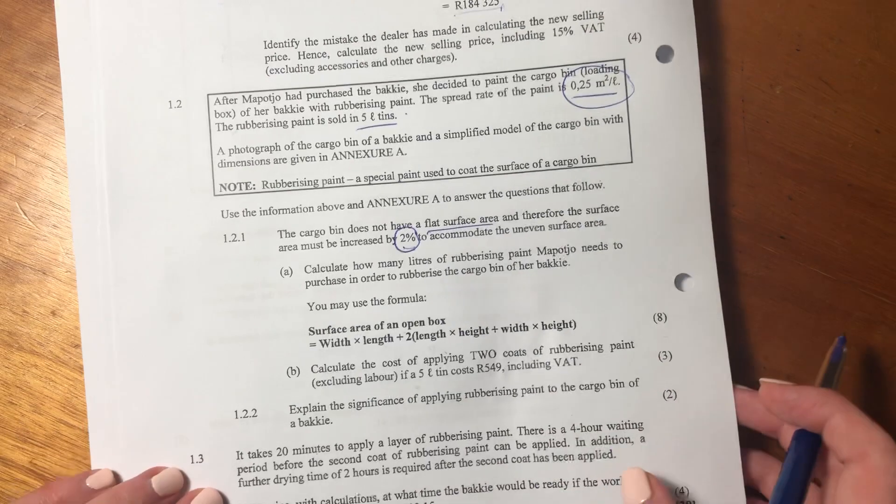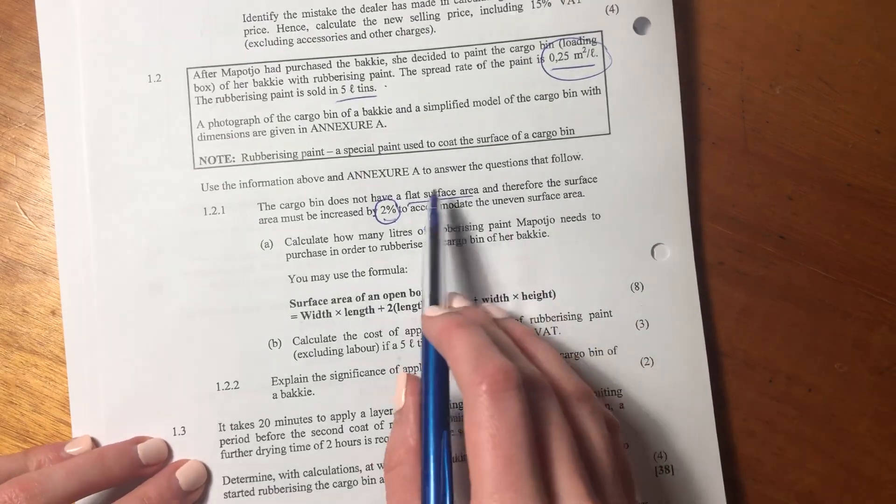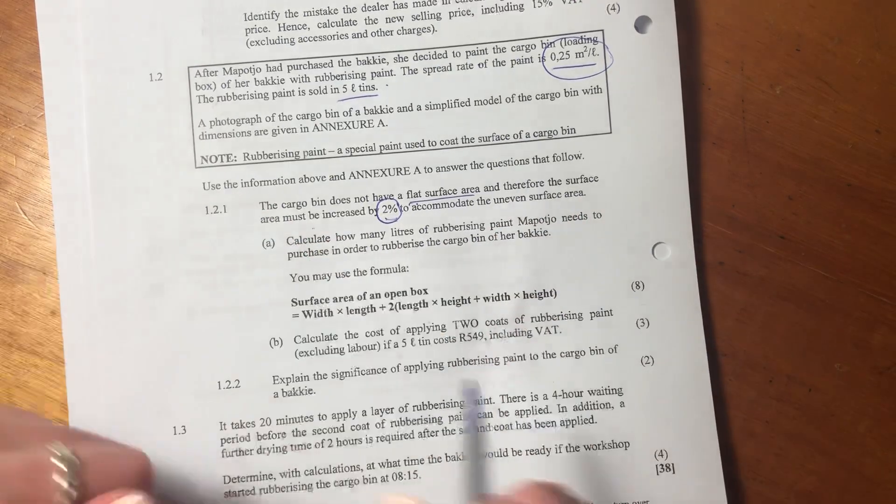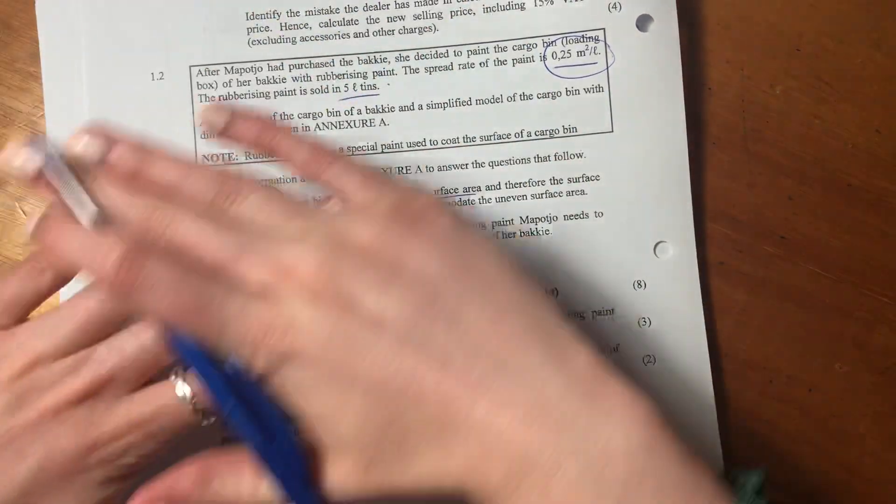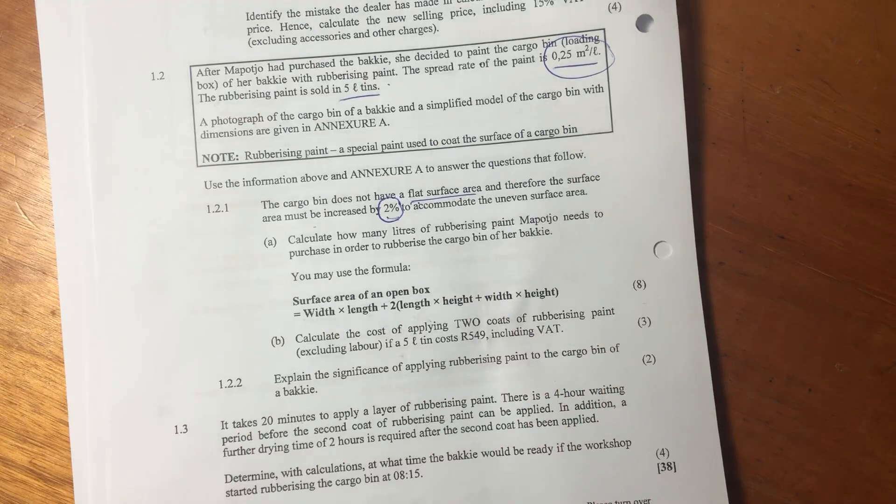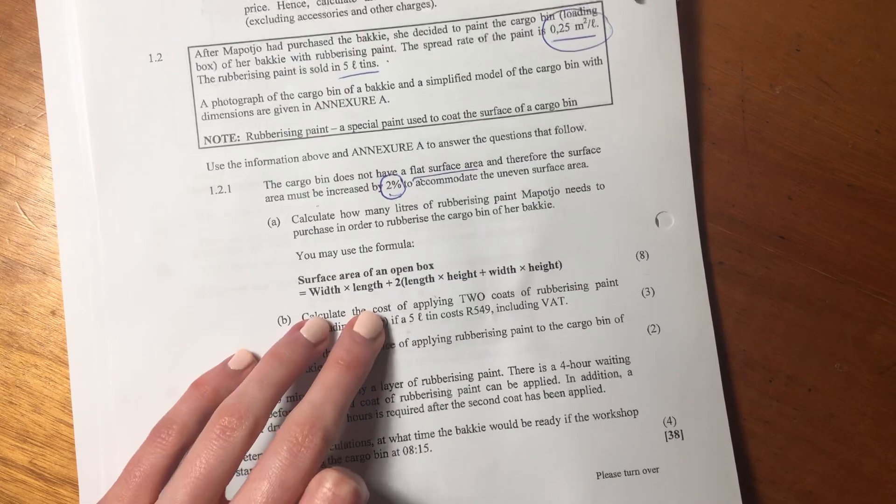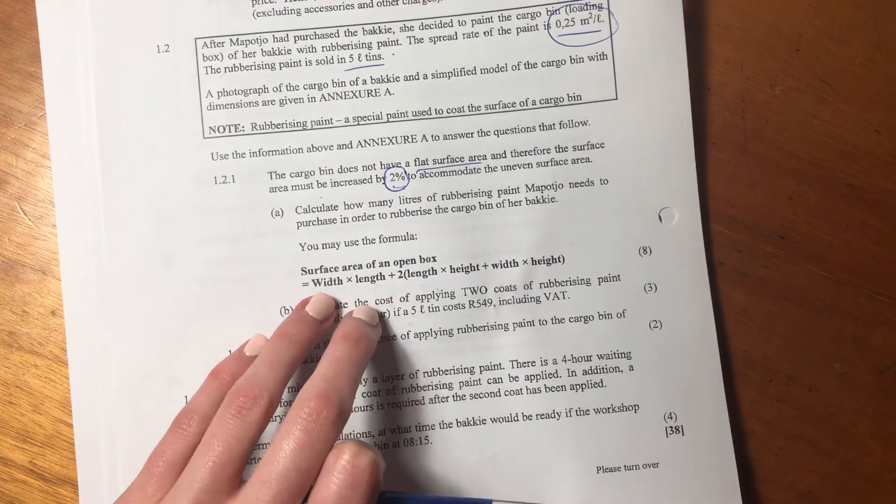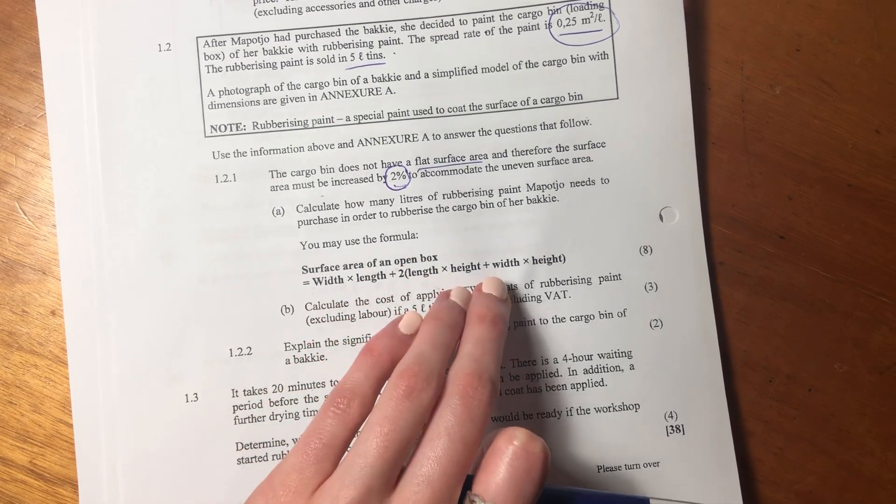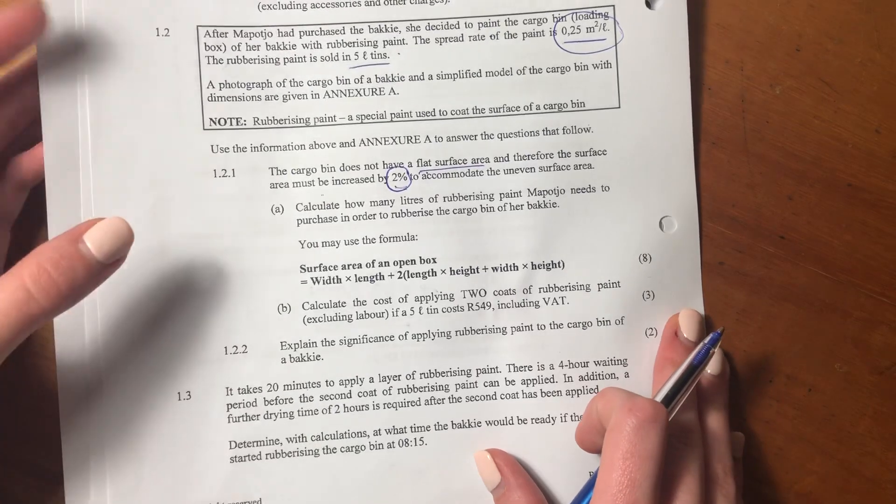They say the cargo bin does not have a flat surface area and therefore the surface area must be increased by 2% to accommodate the uneven. So they're basically saying it's not perfectly flat. It's a little bit uneven. So we have to add 2% so that we can account for that unevenness. You may use the formula. So it says the surface area of an open box is width times length plus 2 times open brackets length times height plus width times height.